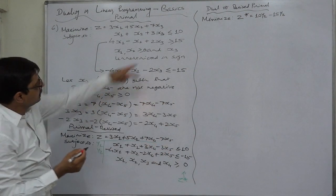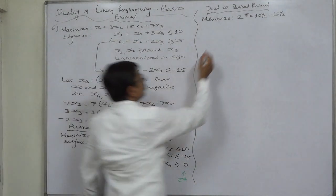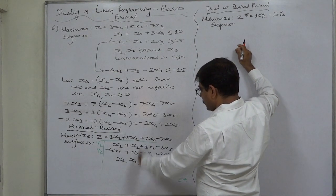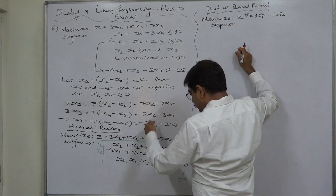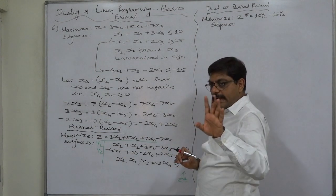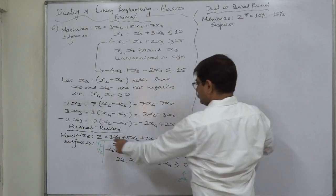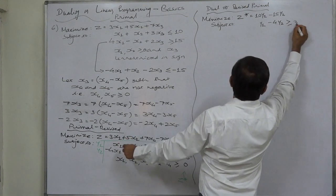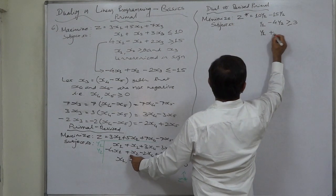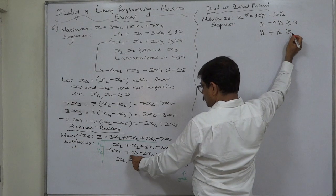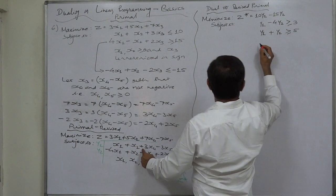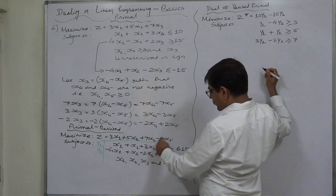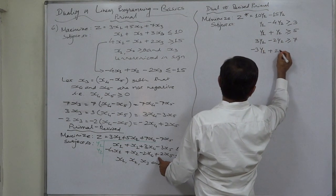Since there are only two constraints in the primal, there are only two variables in the dual. The dual will have four constraints — one for each primal variable. From x1: y1 minus 4y2 greater than or equal to 3. From x2: y1 plus y2 greater than or equal to 5. From x4: 3y1 minus 2y2 greater than or equal to 7. From x5: minus 3y1 plus 2y2 greater than or equal to minus 7.